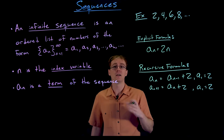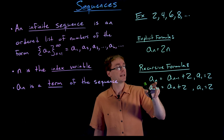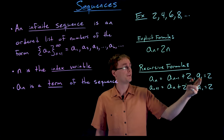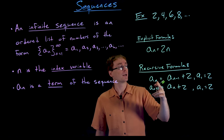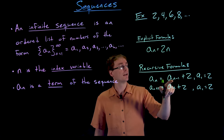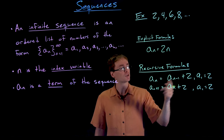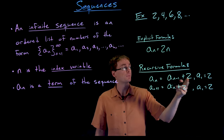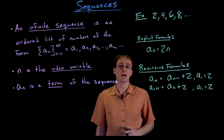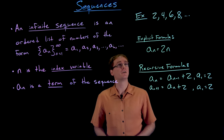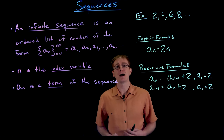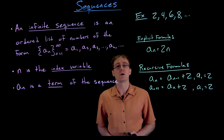Checking the recursive formula: starting at n equals two, a sub two equals a sub one plus two, which is two plus two equals four. Plugging in n equals three gives a sub three equals a sub two plus two, which is four plus two equals six. So both formulas describe the same sequence. Sometimes you may see multiple different explicit or recursive formulas describing the exact same sequence — it may just be algebraic simplification or a totally different approach.